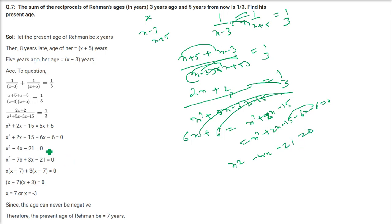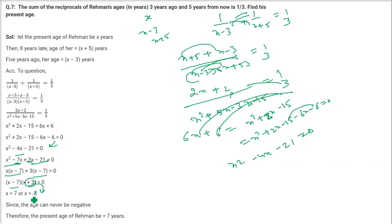Now, 4X can be written as minus 7X plus 3X because 7 times 3 is 21. So: X(X minus 7) plus 3(X minus 7) equals 0, giving factors X minus 7 and X plus 3. So X equals 7 or X equals minus 3. The age cannot be negative, so X equals 7 is Rahman's present age.